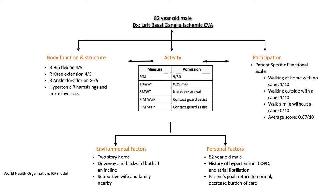The patient is an 82-year-old male who presented to outpatient physical therapy approximately two months following a left basal ganglia ischemic stroke. His weakness was most notable in his right hip flexors, quadriceps, and anterior tibialis, with hypertonicity noted in his hamstrings and ankle inverters.